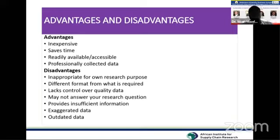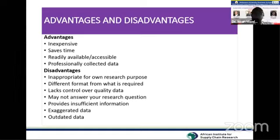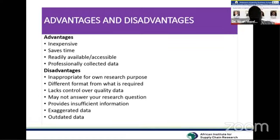Research keeps improving because previous researchers may have done great work, but it was based on insufficient information. Another disadvantage is exaggeration of data — you may need specific information, but the available data goes beyond the scope of your area, such as beyond the supply chain domain. You need to pay attention to the limits within which you will use the data for your specific project.